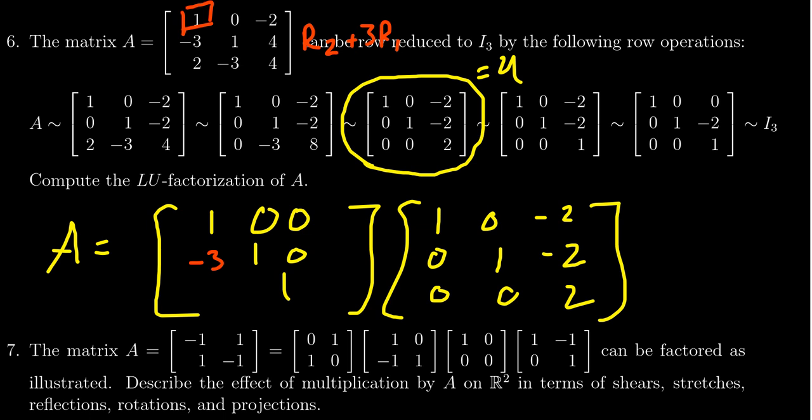Then the next one, we still have our pivot in the 1,1 spot. We got rid of this 2 right here. How are we going to get rid of the 2? We're going to take row 3 and subtract from it 2 times row 1. And so we're going to put a positive 2 right here.